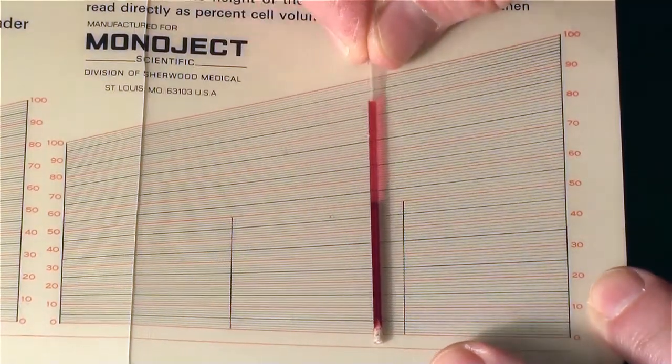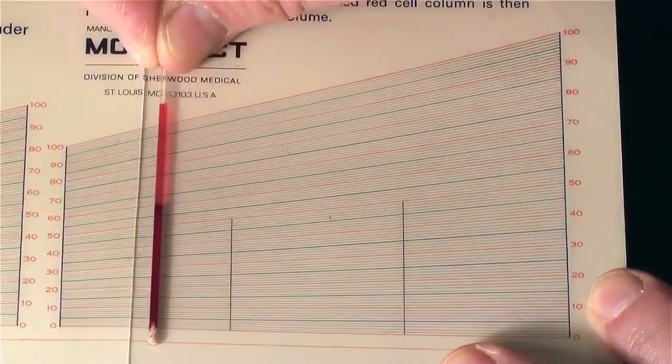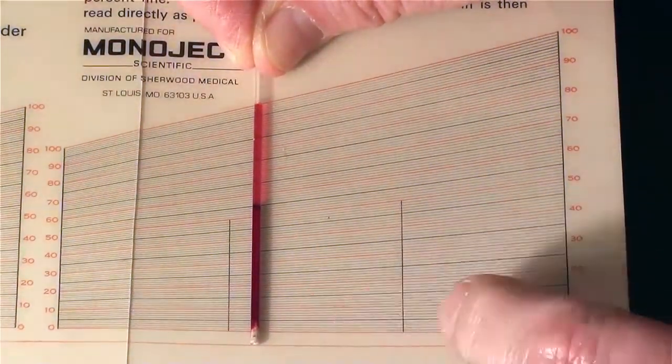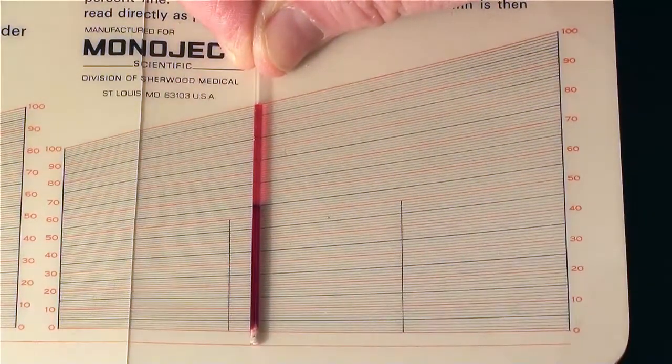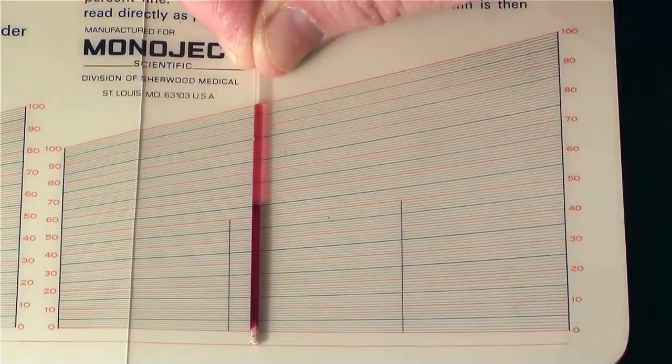In order to do that, I need to slide the tube left and right until the bottom of the blood is on the zero line and the top of the blood is on the hundred line.